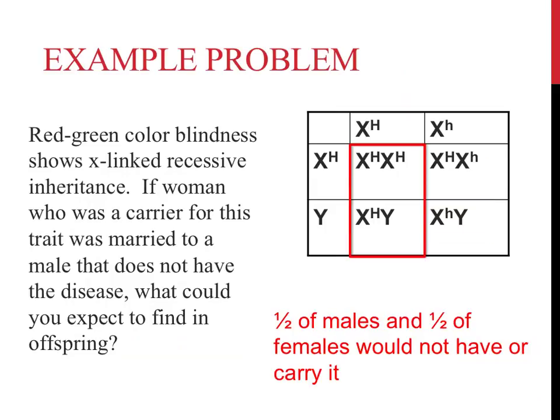On the left-hand side of this Punnett square are a male and a female that only possess capital letter H's, which are dominant alleles. For this reason, they would not have this recessive X-linked trait, nor would they carry it. They couldn't pass on this disease to their children.